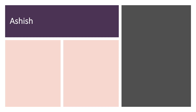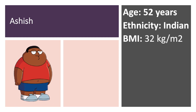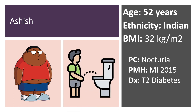Meet Ashish. Ashish is a 52-year-old obese gentleman originally from India. He presents to the GP complaining of constantly having to get up in the middle of the night to go to the toilet and is therefore always tired. The GP subsequently diagnoses Ashish with type 2 diabetes. Ashish previously had a myocardial infarction in 2015, however is currently otherwise fit and well and on no medications.